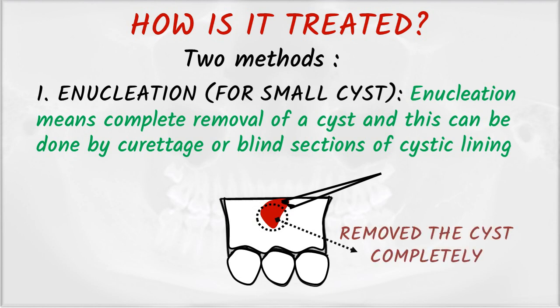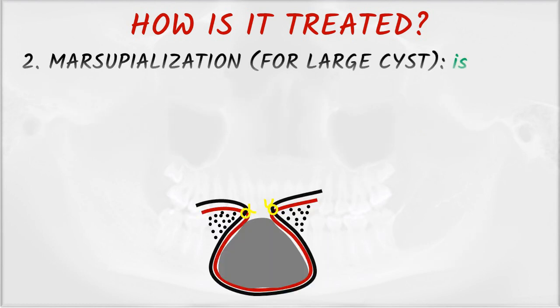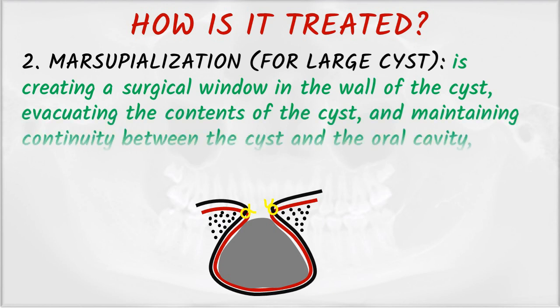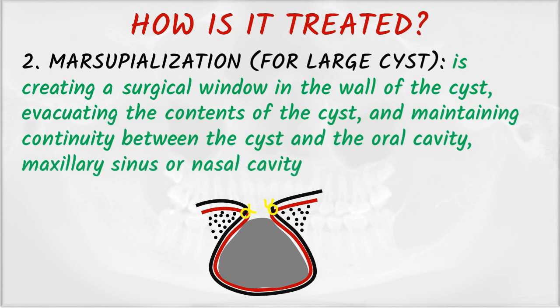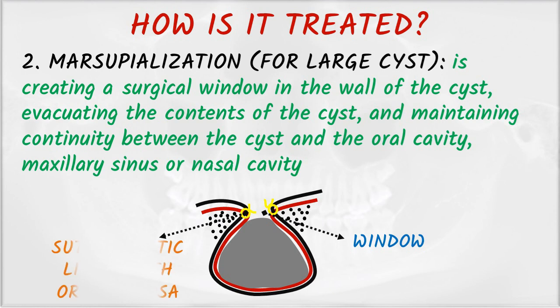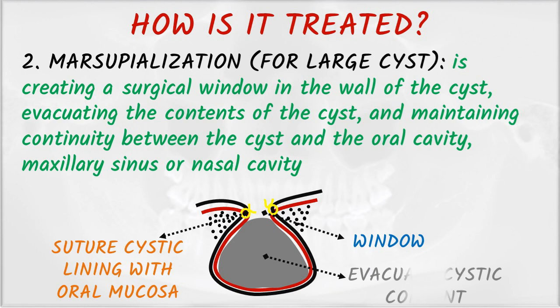The second method is marsupialization, used for large cysts. It involves creating a surgical window in the wall of the cyst, evacuating the content of the cyst, and maintaining continuity between the cyst and the oral cavity, maxillary sinus, or nasal cavity. A window is created, then the cystic lining is sutured with oral mucosa and the cystic content is evacuated, decreasing the pressure inside the cystic cavity.